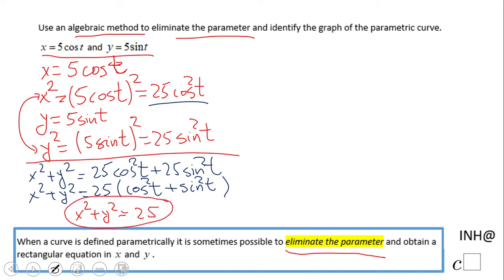We used a trig identity to get rid of the parameter, different than some other parametric equations. But now this tells us what? We have a circle with radius of 5.